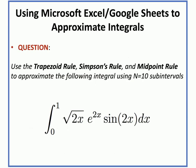The integral we'll consider is the integral from 0 to 1 of the square root of 2x times e to the 2x times sine of 2x. We'll use the trapezoid rule, Simpson's rule, and midpoint rule to approximate that integral using 10 subintervals. Let's get started.